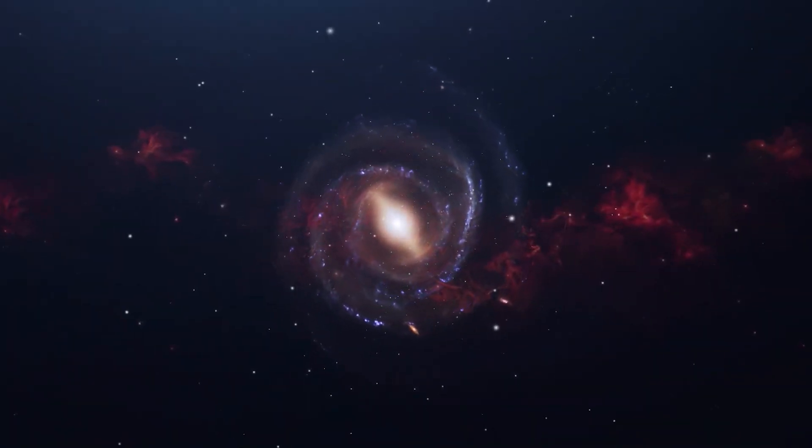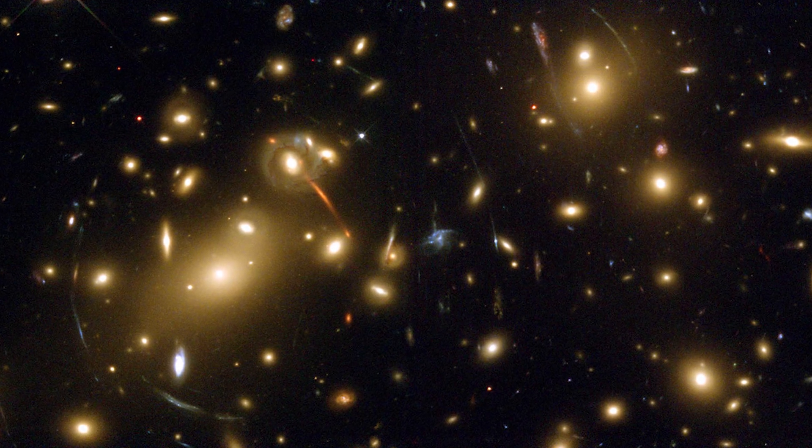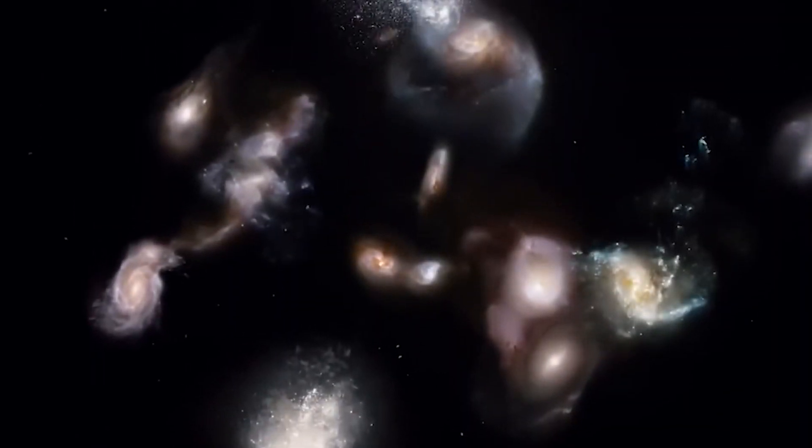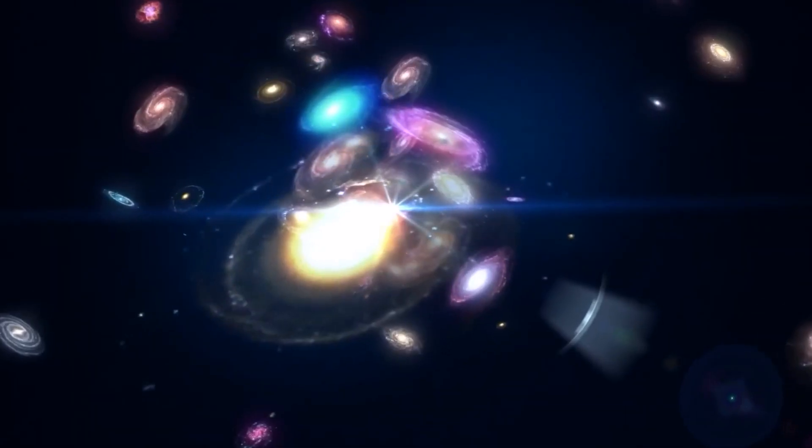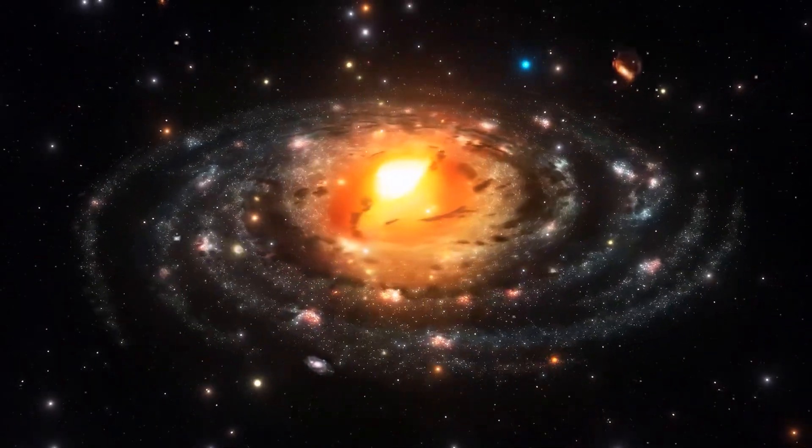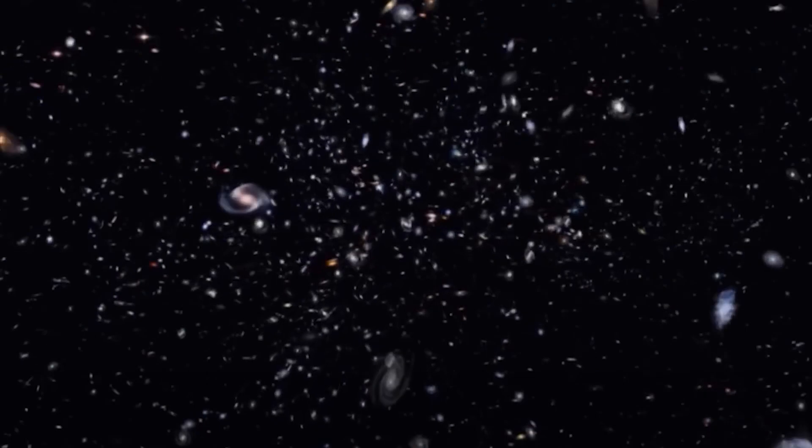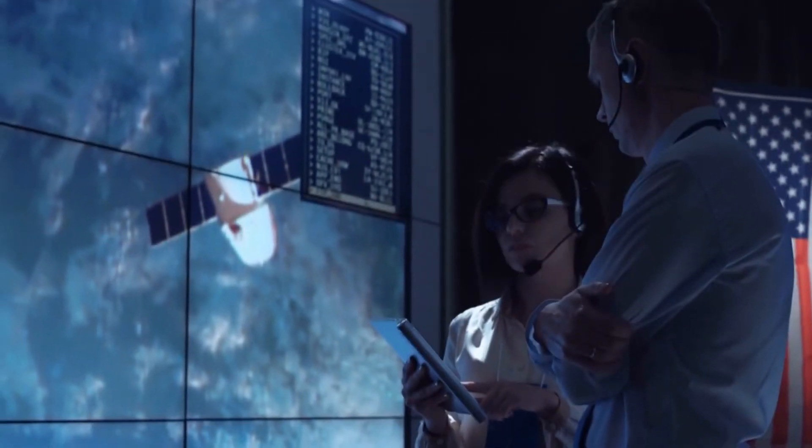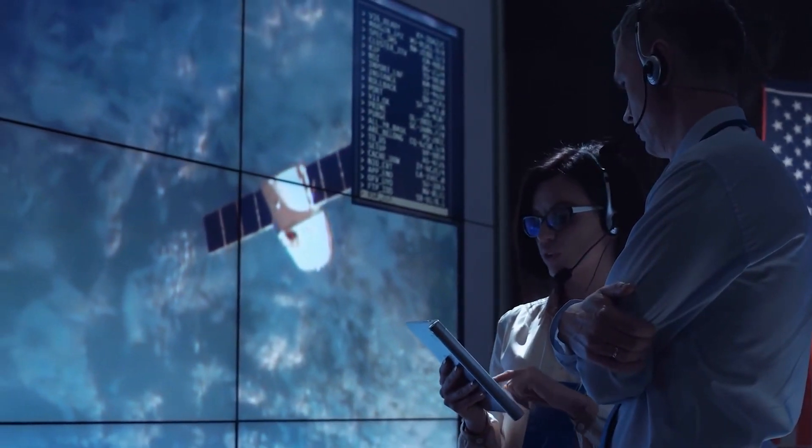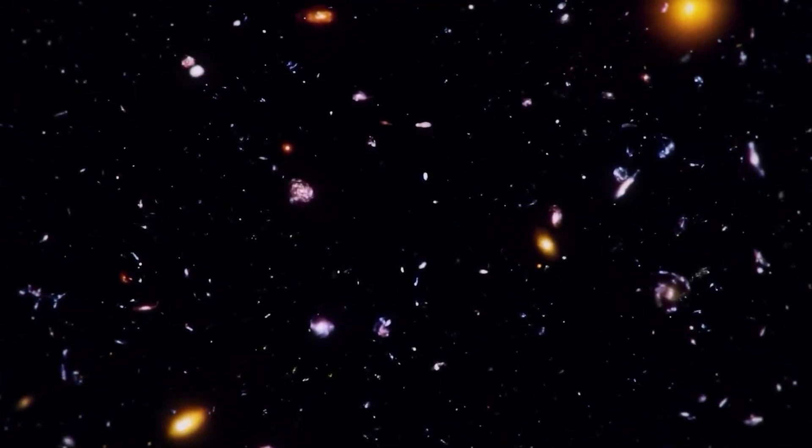At its core, dark flow refers to the unexpected and puzzling motion of galactic clusters. These clusters, comprising approximately a thousand galaxies and scorching hot gas emitting X-rays, were found to be streaming in the same direction at astonishing speeds exceeding two million miles per hour. This cosmic oddity has sparked a multitude of theories and captured the imagination of astrophysicists and cosmologists.